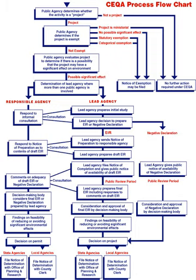The lead agency then certifies the final EIR and issues its findings. Should significant and unavoidable impacts remain after mitigation, a statement of overriding considerations must be prepared. Finally, the lead agency may decide whether or how to approve or carry out the project, at which time a Notice of Determination must be filed within five days of approval. Appeal periods and litigation avenues remain after the Notice of Determination.